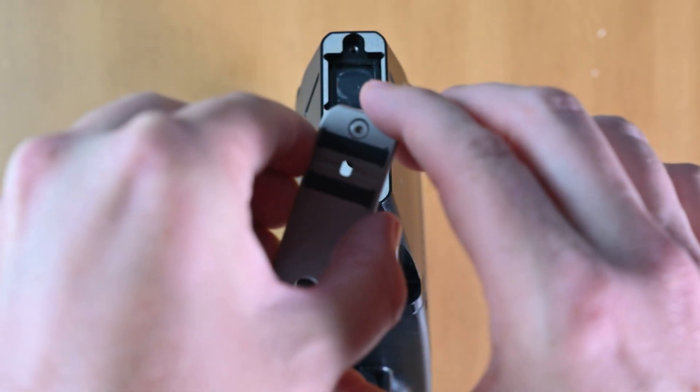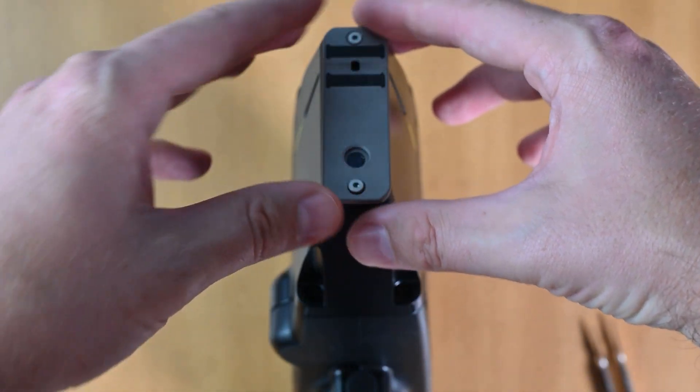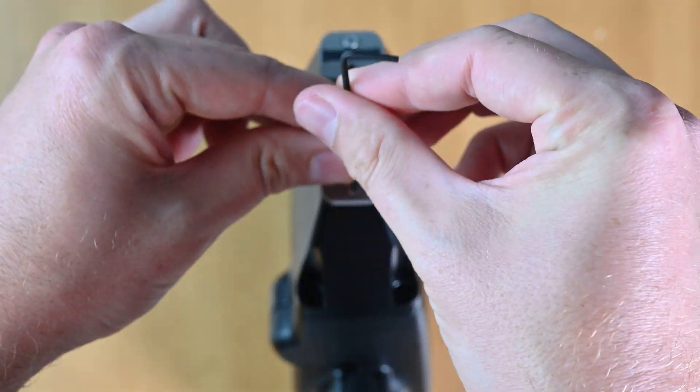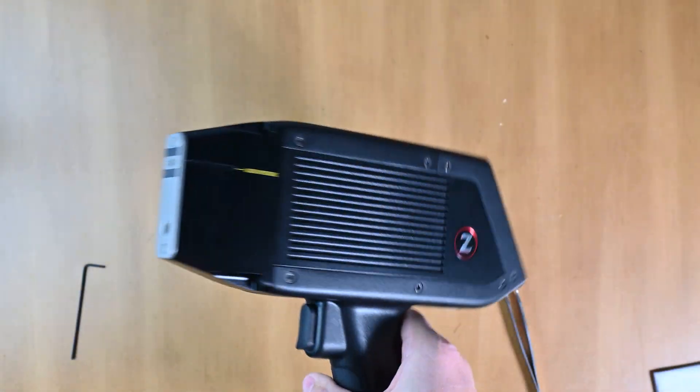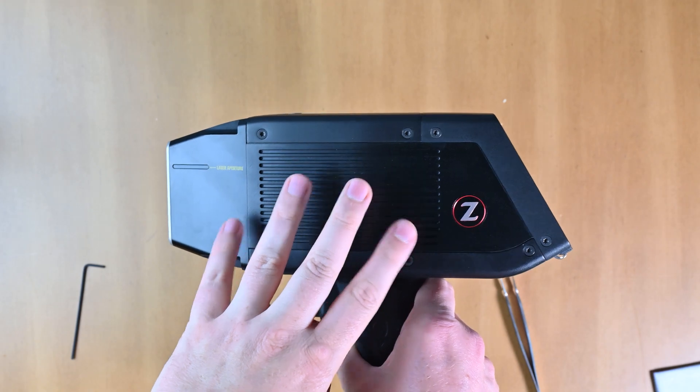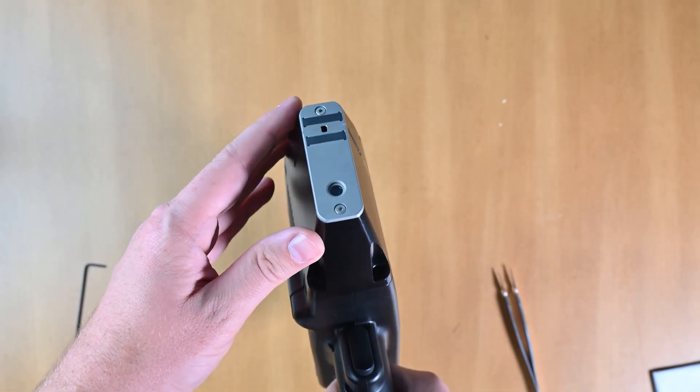So the next step is just the reverse of what we did to start. And there you go. Your PSYOP Z series handheld LIBS analyzer has now been cleaned.